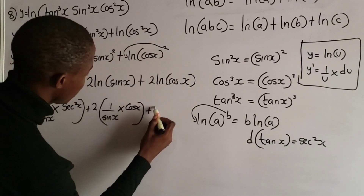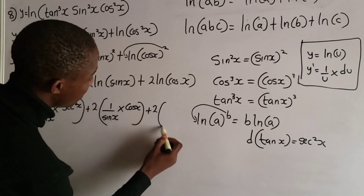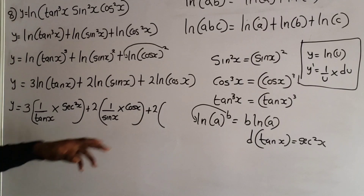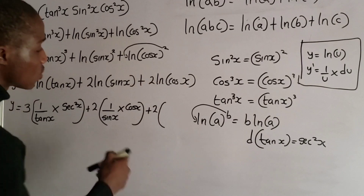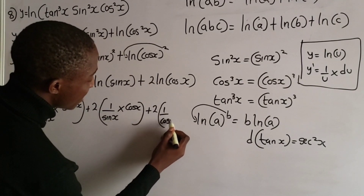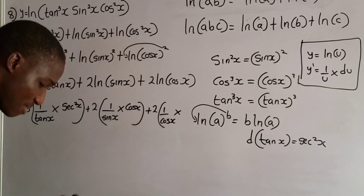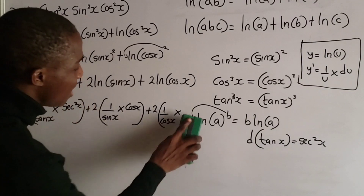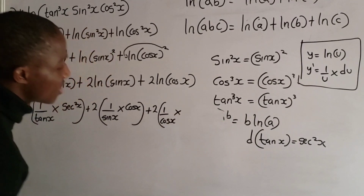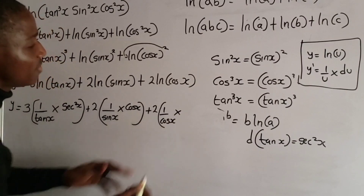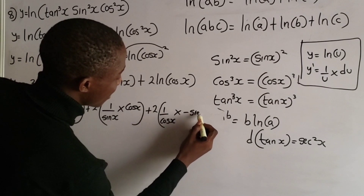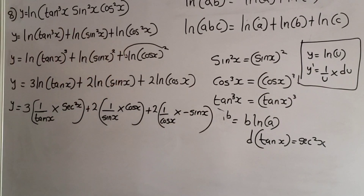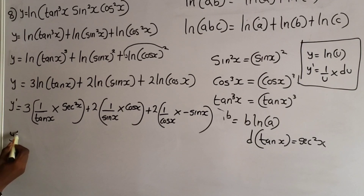For the term 2 ln(cos x), I take 1 over cos x and multiply by the derivative of cos x, which is minus sin x. So the derivative of y is equal to 3 sec²x over tan x, plus 2 times cos x over sin x, plus 2 times (minus sin x over cos x).